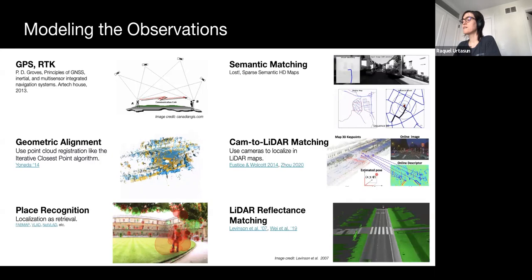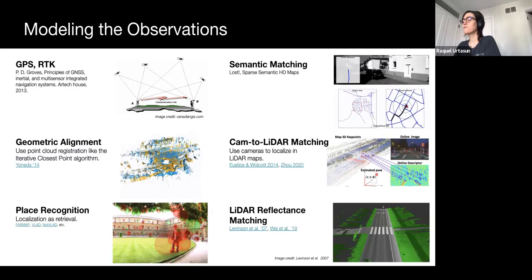Camera-to-lidar matching aims to leverage inexpensive cameras to localize against maps built from more expensive lidar, either using heuristics or neural feature matching.